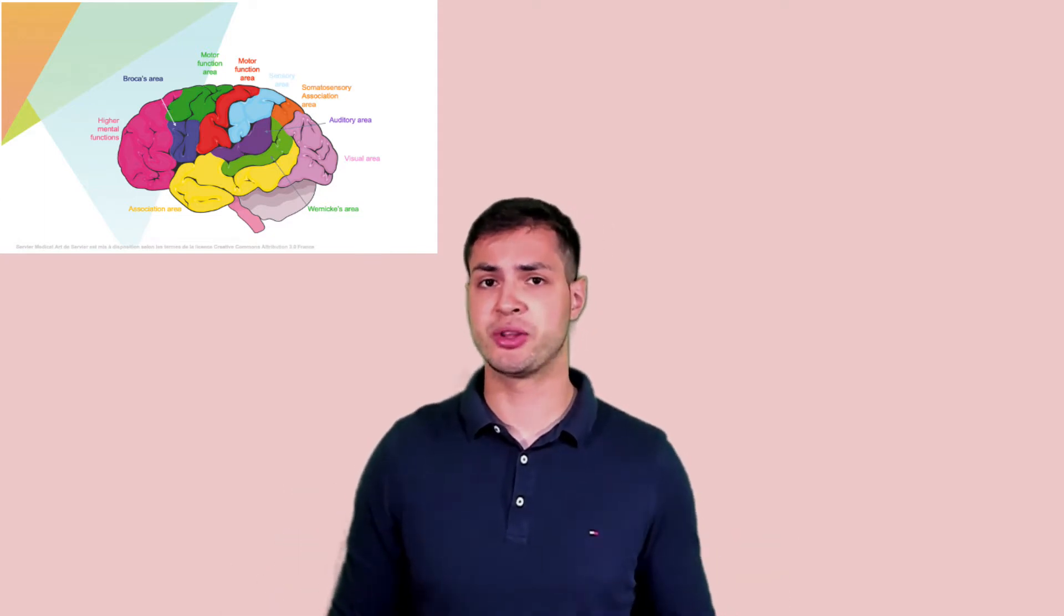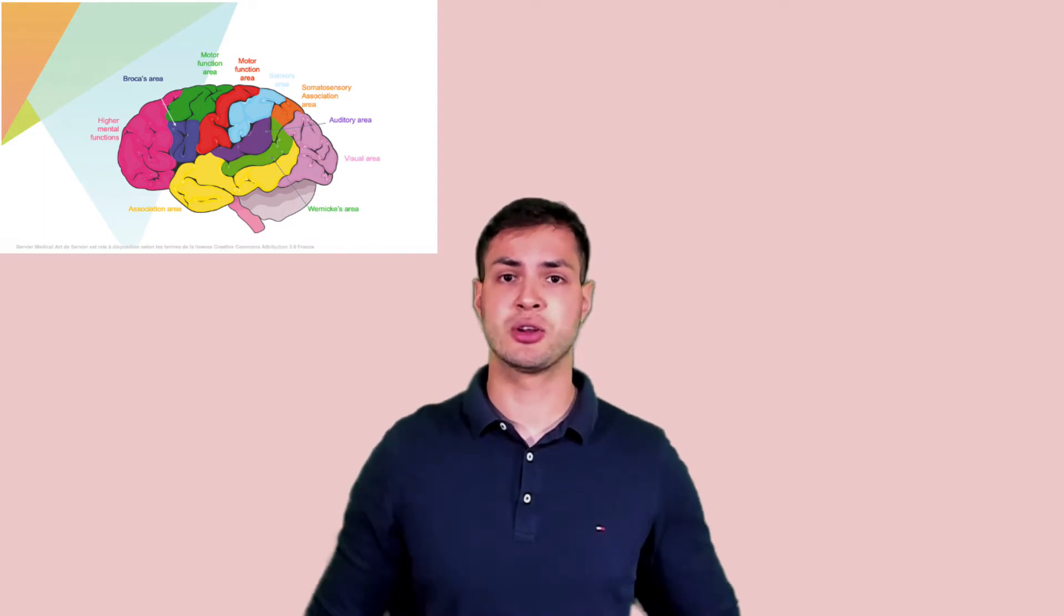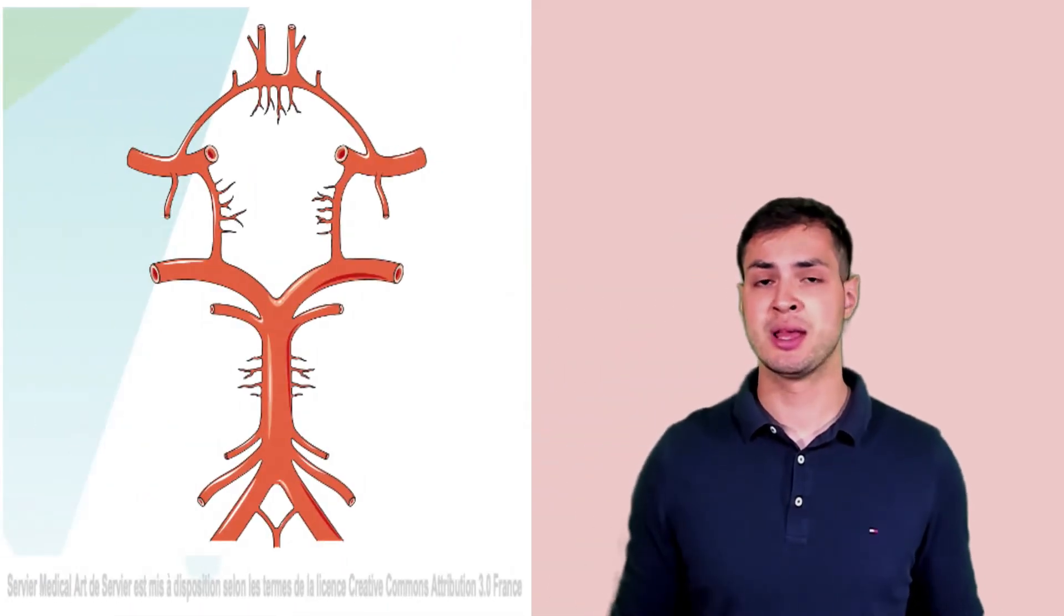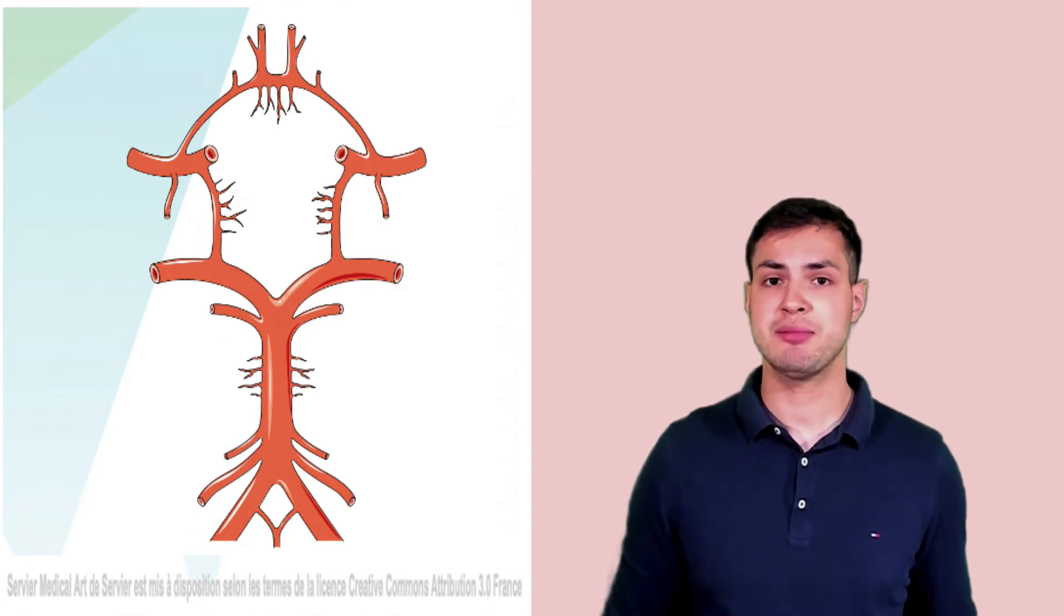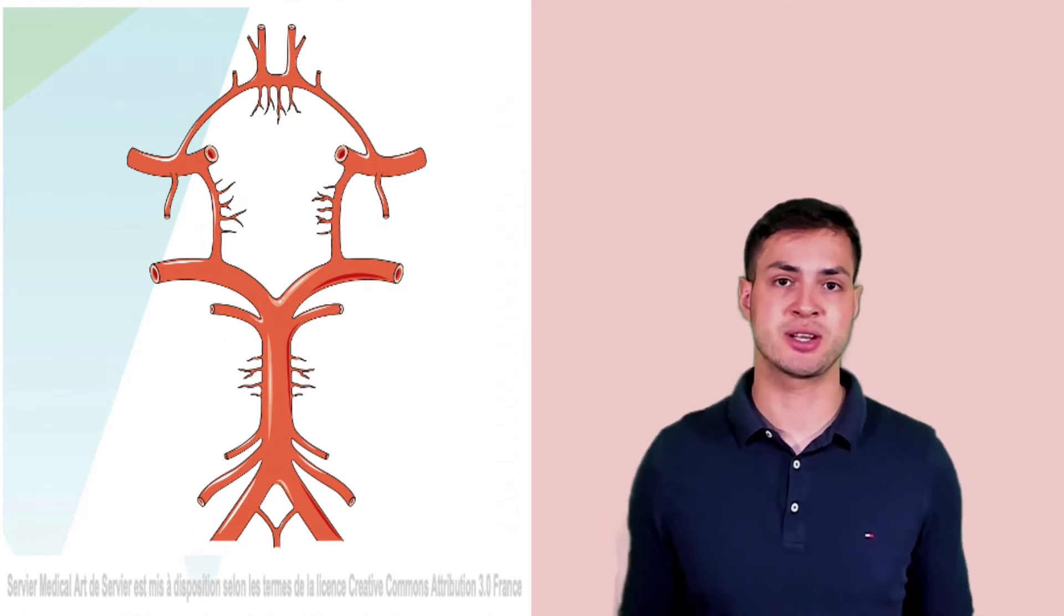Next thing in anatomy that we want to cover quickly is the circle of Willis. The circle of Willis is made up of certain vessels. If you want to pause the video here and see if you can name them, because we'll move on to the next slide with the answers ahead.